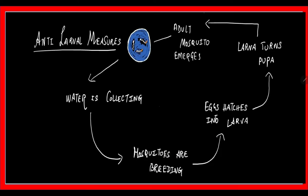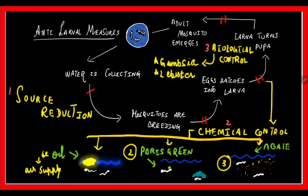For anti-larval measures: water is collected, mosquitoes breed, eggs hatch into larvae, larvae turn into pupae, and adult mosquitoes emerge from pupae. This life cycle repeats. Where can we intervene? First is source reduction—preventing water collection where mosquitoes breed. Based on the source and type of water collected, different mosquitoes will breed.